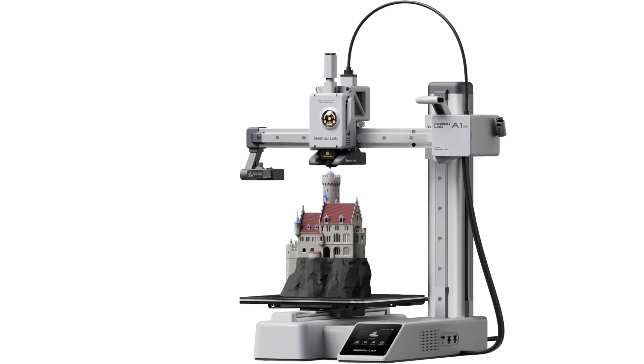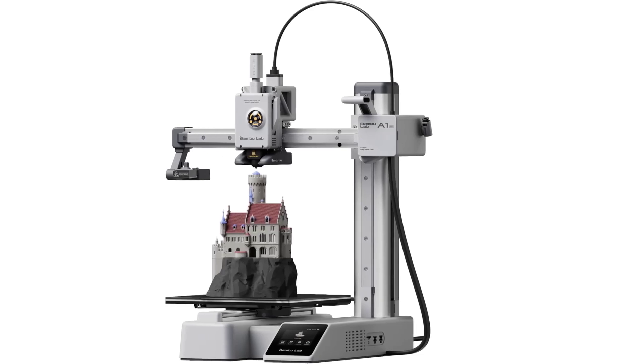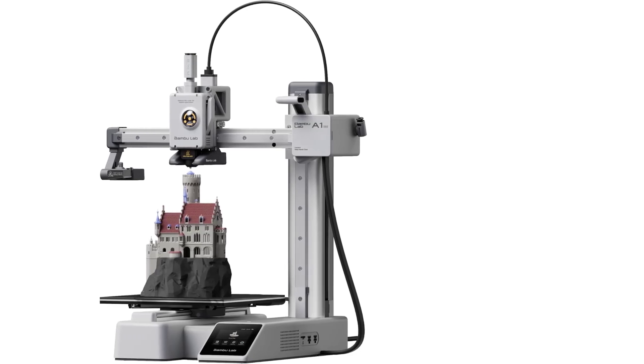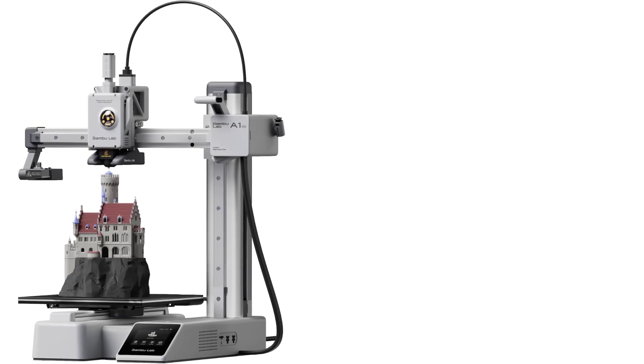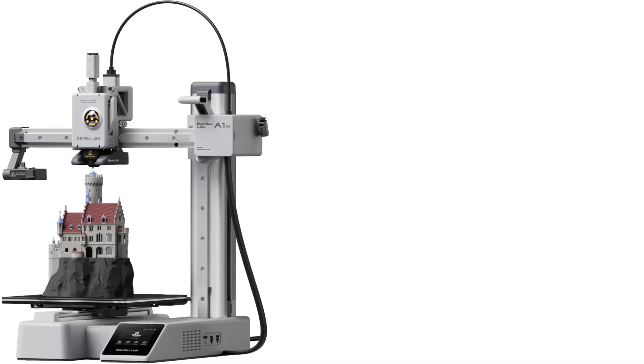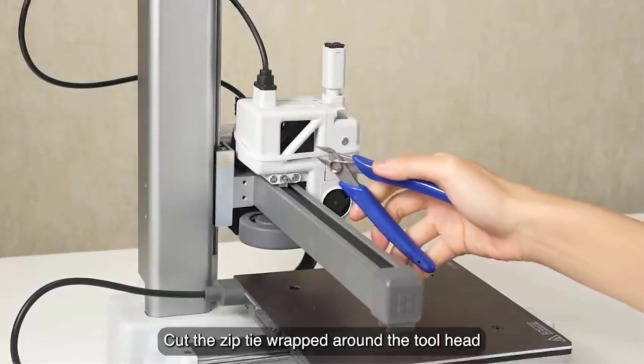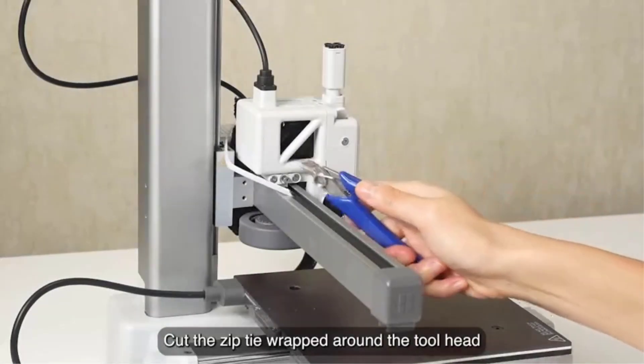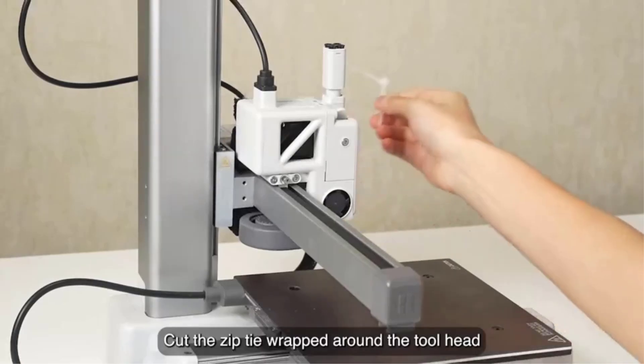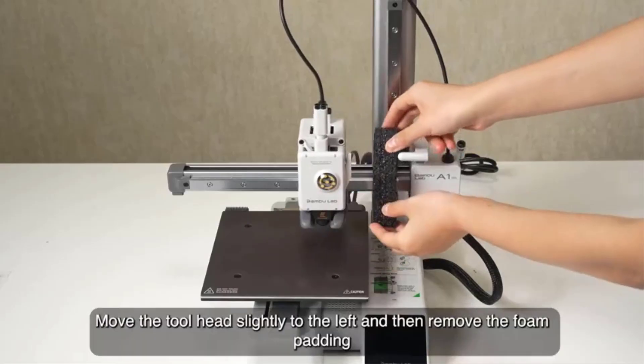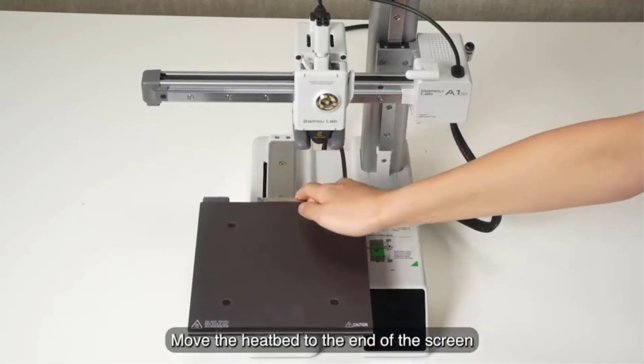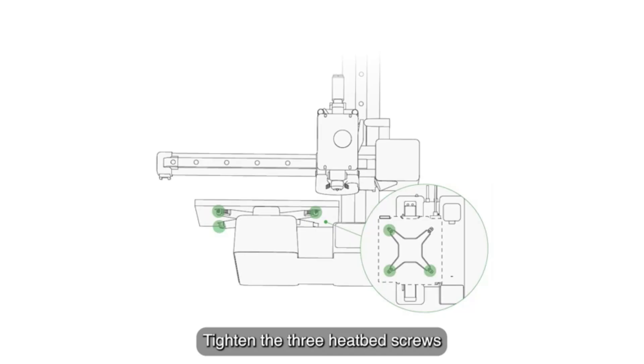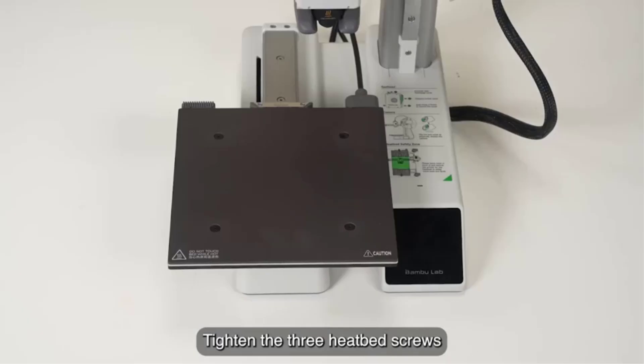Additionally, the printer includes active flow rate compensation, which dynamically adjusts the extrusion flow to ensure consistent filament deposition, further enhancing print quality. In terms of noise, the printer operates at an impressively quiet less than or equal to 48 dB, making it suitable for use in environments where minimal disturbance is important, such as home offices or shared spaces. This feature ensures that users can print without the loud, disruptive sounds typically associated with 3D printing.